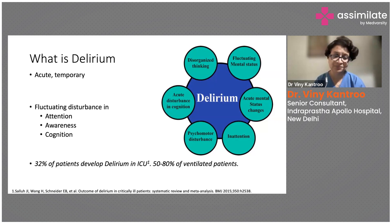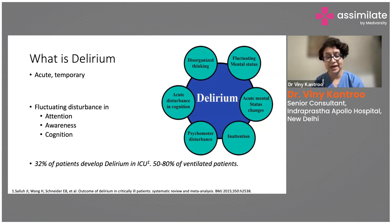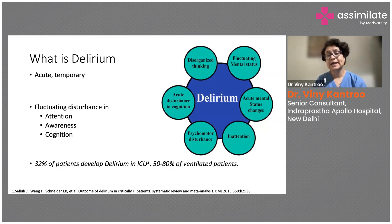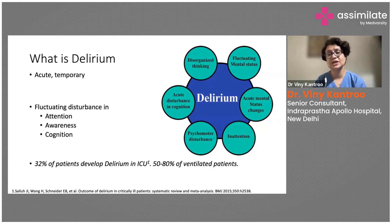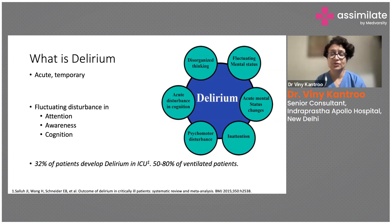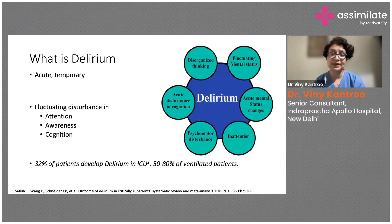About 32% of patients develop delirium in the ICU, and this rises to 50–80% in ICU patients who are ventilated. Patients on the ventilator are more prone to delirium because the amount of sedative drugs used in these patients is significantly higher compared to those who are not ventilated.